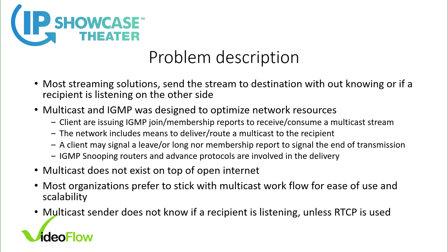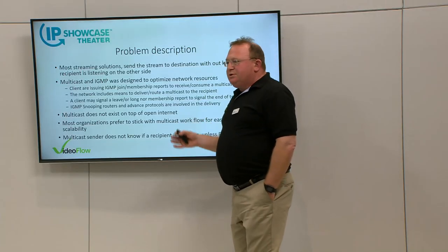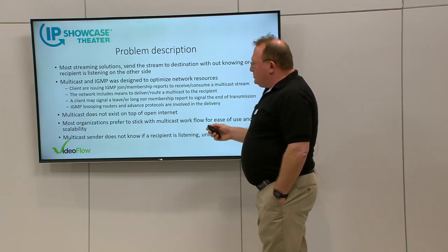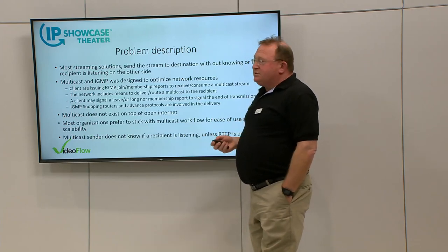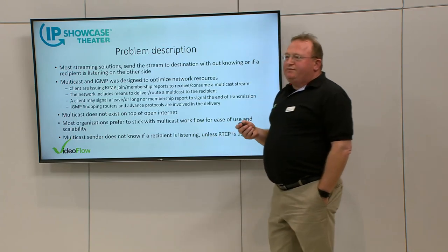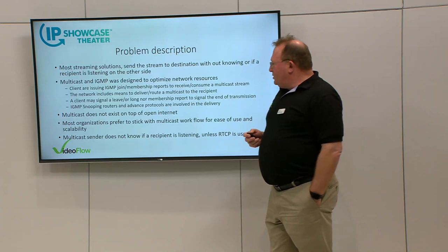A client issues an IGMP join membership report to receive and consume a multicast stream. A client may also signal leave, or a membership report can signal end of transmission — basically you can say, I'm done listening, leave me out of the stream. IGMP snooping on a router or switch is involved in delivery. However, multicast does not exist on the open internet because most ISPs block it, so people use tunneling and private networks. Most operations in the US and worldwide are still keeping up with multicast, and we need to find a solution to give them the same experience.